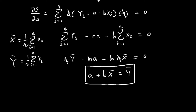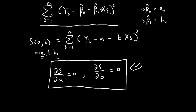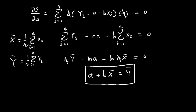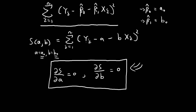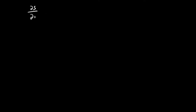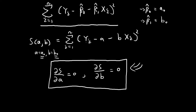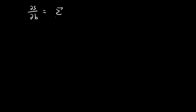So the values of A and B that minimize this function must satisfy this first equation. But we have two unknowns and only one equation. So we also need to consider the partial derivative of S with respect to B. Let's now compute that partial derivative.